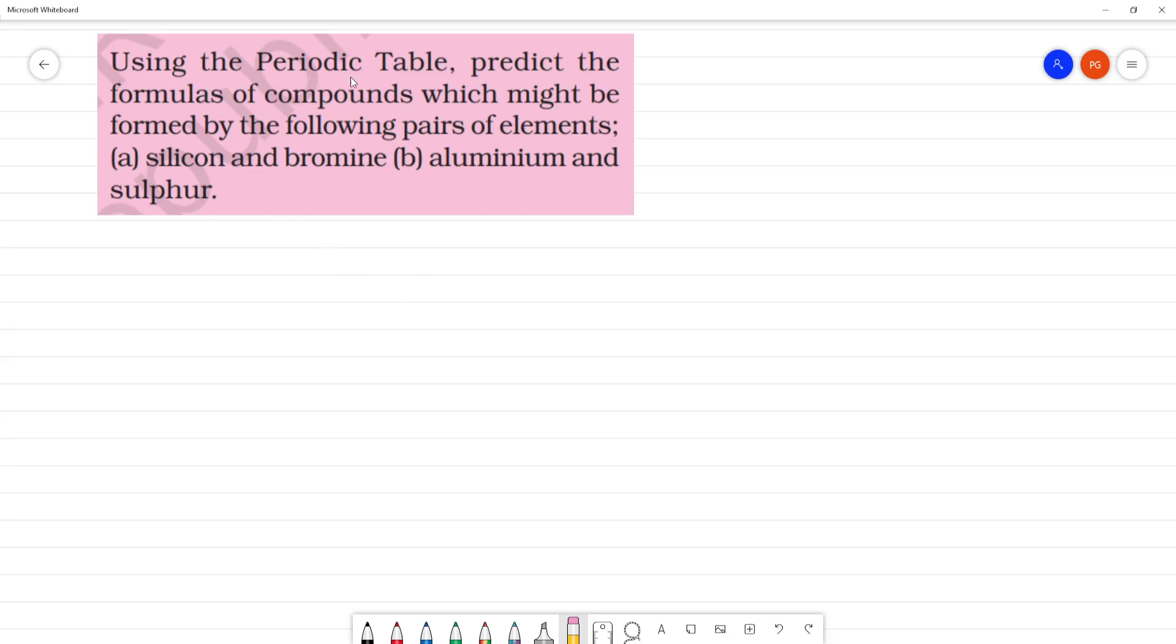Using the periodic table, predict the formulas of compounds which might be formed by the following pairs of elements. First question, silicon and bromine.